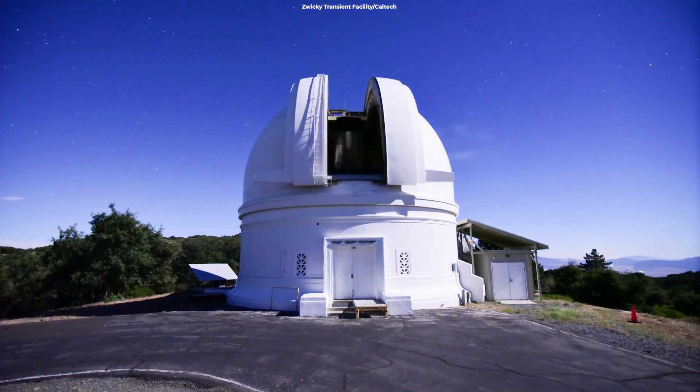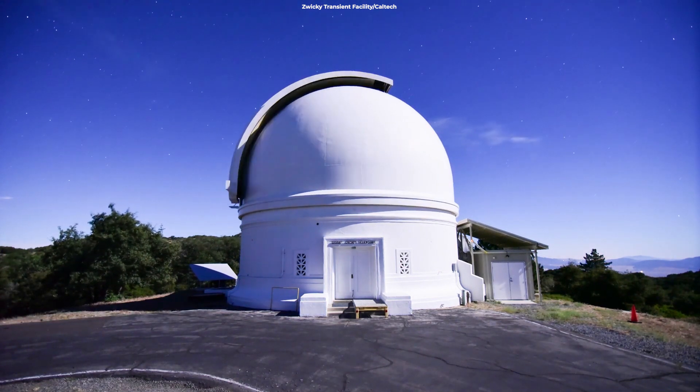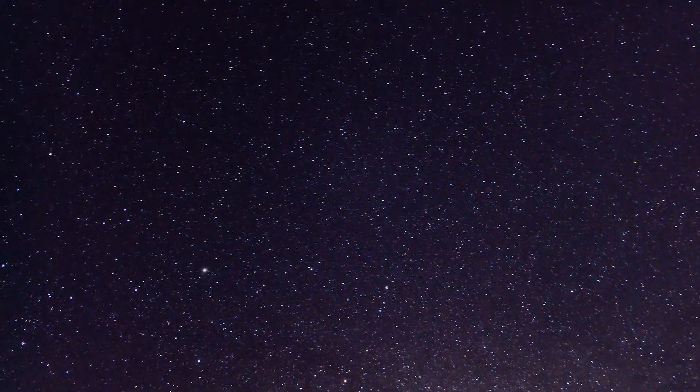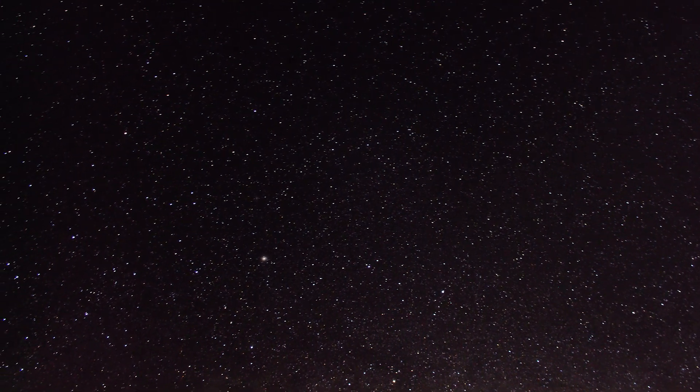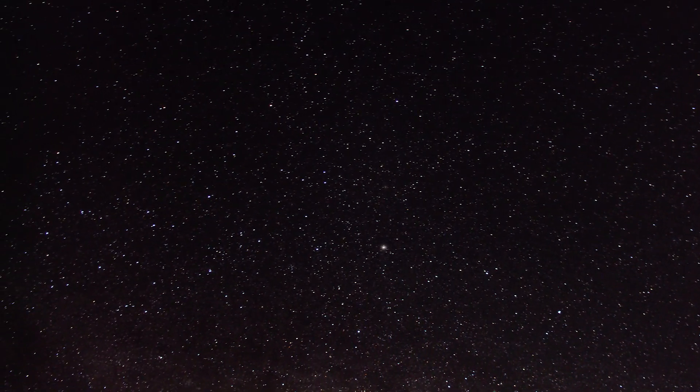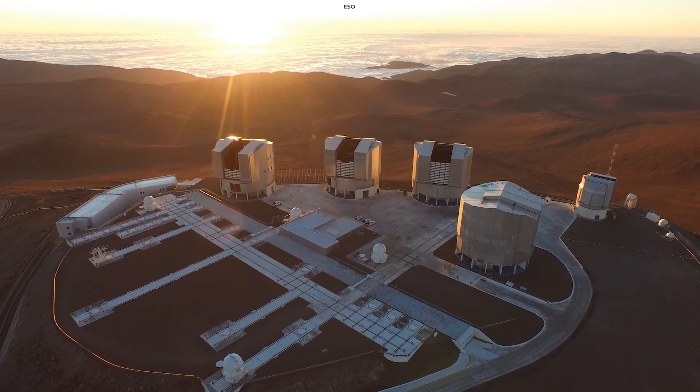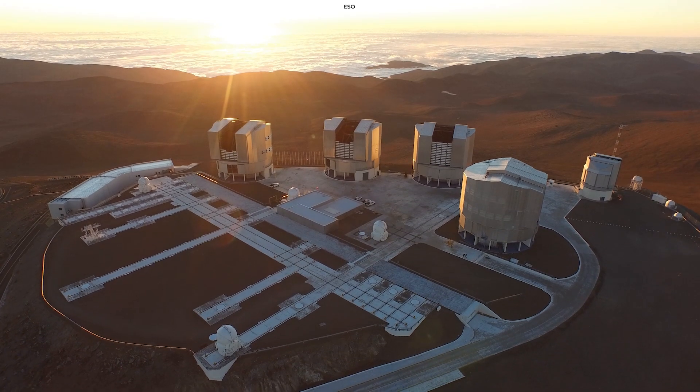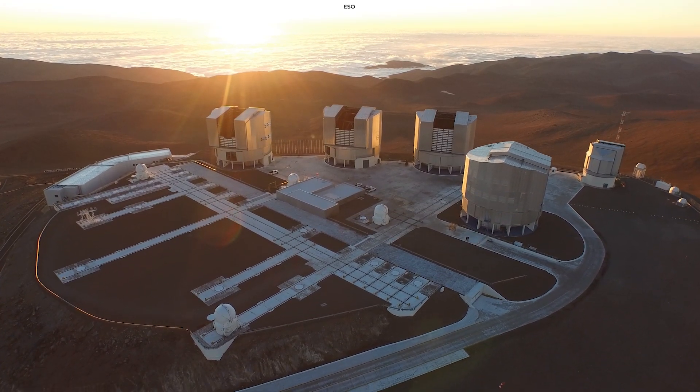Zwicky is an all-sky survey at the Palomar Observatory in California. It's usual business for such survey telescopes to pan across the sky for signs of short-lived and extreme events. When interesting candidates are found, the astronomers then jump to more focused telescopes like the Very Large Telescope to make more detailed observations.